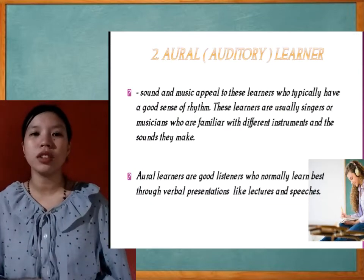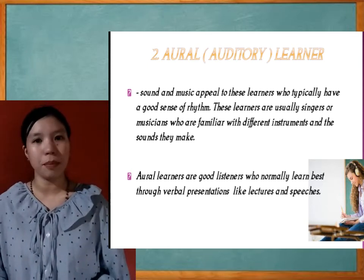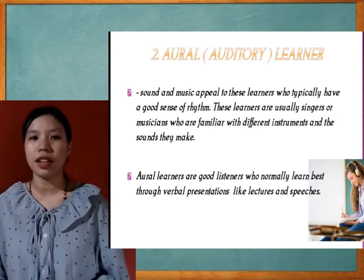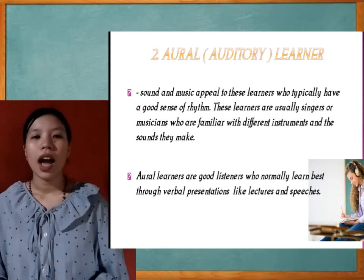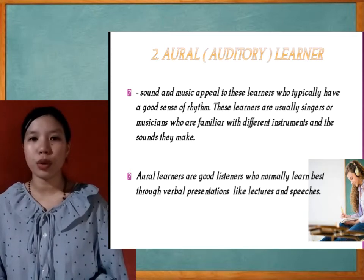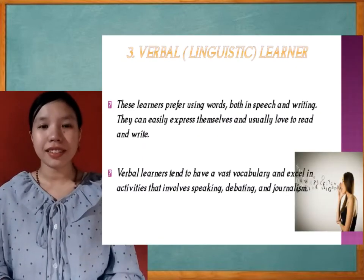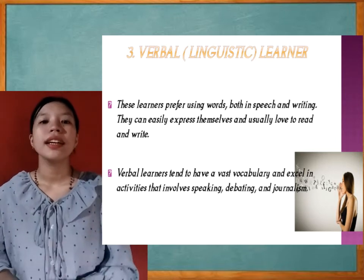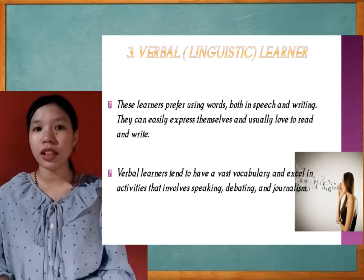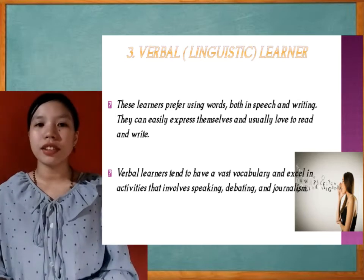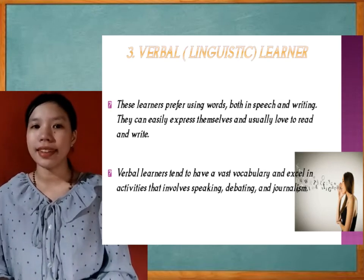Second is the oral or auditory learners. Sound and music appeal to these learners, who typically have a good sense of rhythm. These learners are usually singers or musicians familiar with different instruments and the sounds they make. Aural learners are good listeners who normally learn best through verbal presentations like lectures and speeches. Third is the verbal or linguistic learners. These learners prefer using words both in speech and writing. They can easily express themselves and usually love to read and write. Verbal learners tend to have a vast vocabulary and excel in activities that involve speaking, debating, and journalism.